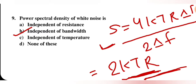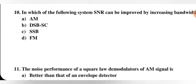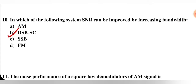In which of the following systems can signal-to-noise ratio be improved by increasing the bandwidth — AM, DSB-SC (double sideband suppressed carrier), SSB (single sideband), or FM? The correct answer is DSB-SC, so B is the correct option. By increasing bandwidth in DSB-SC, the SNR can be improved.